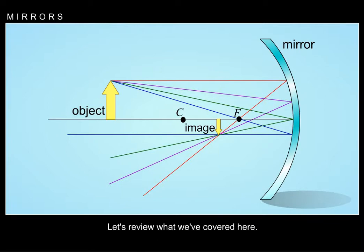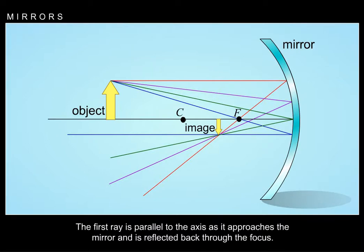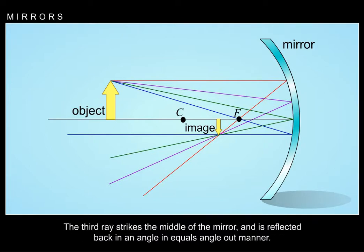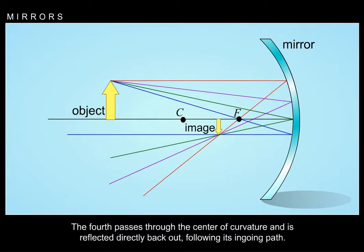Let's review the four principal rays. The first ray is parallel to the axis as it approaches the mirror and is reflected back through the focus. The second passes through the focus as it approaches the mirror and is reflected back parallel to the axis. The third ray strikes the middle of the mirror and is reflected back in an angle-in-equals-angle-out manner. The fourth passes through the center of curvature and is reflected directly back out following its ingoing path.